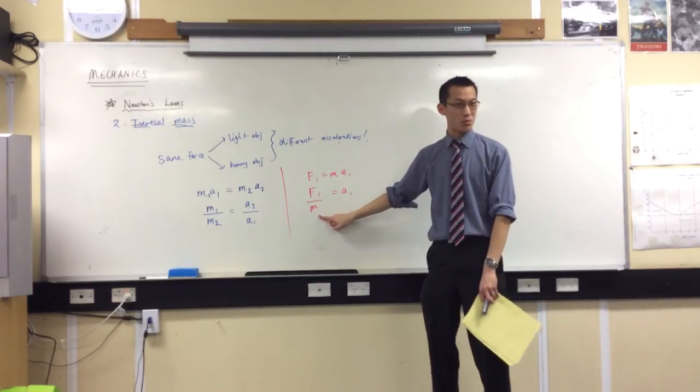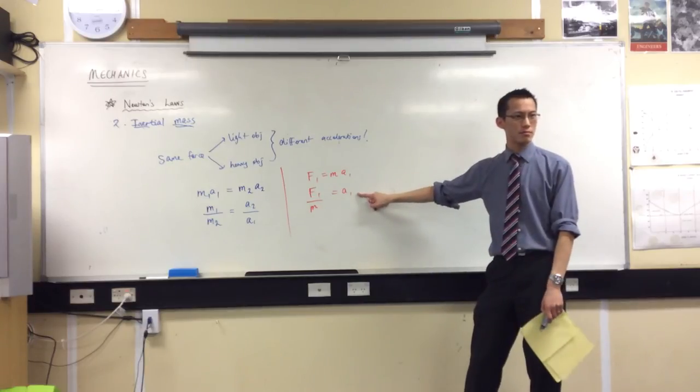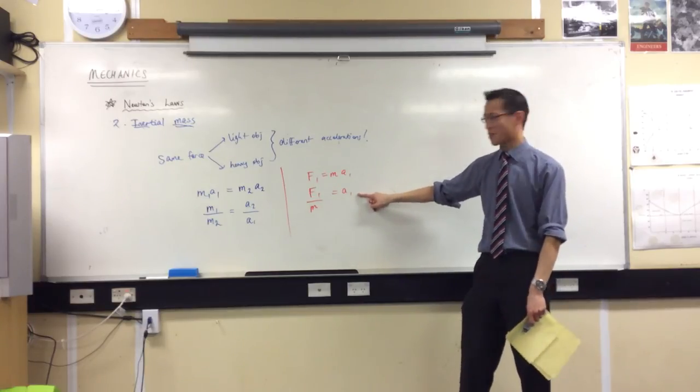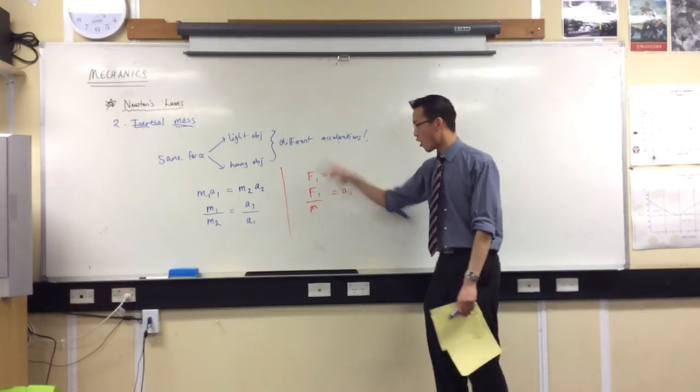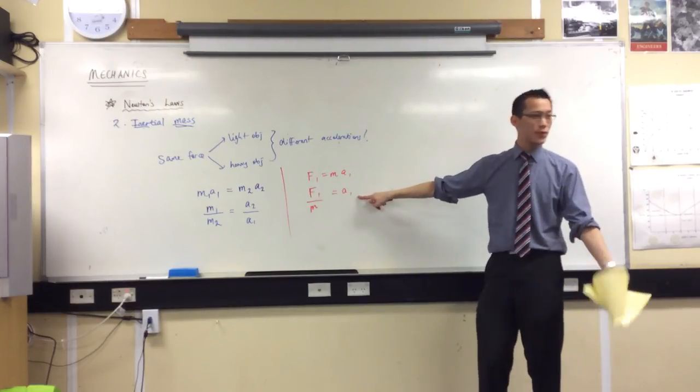If this force is some constant and I make M super small, a very light object, what happens to acceleration? It increases. Because when you make the denominator of a fraction small, you make the whole thing big. And vice versa.